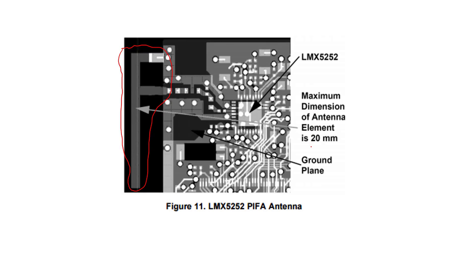The dimension of the antenna is 20 millimeters, which is proportional to lambda. For example, if we have a frequency equal to one gigahertz, the wavelength determines the antenna size.